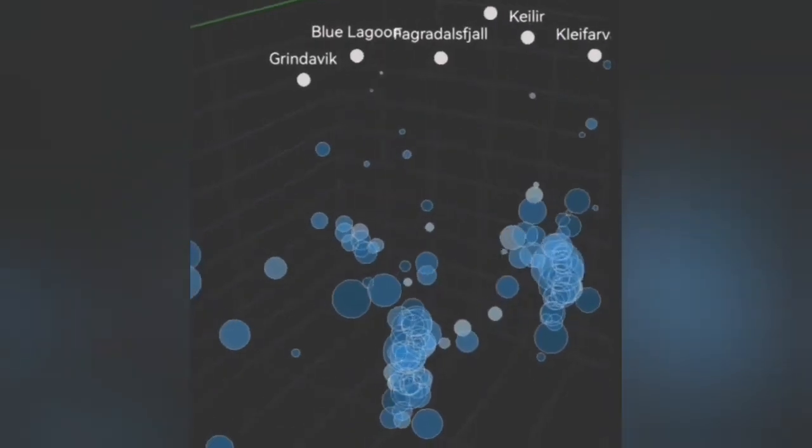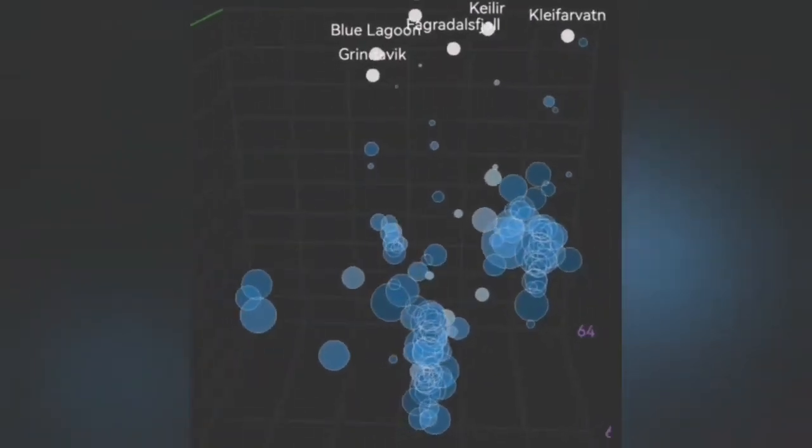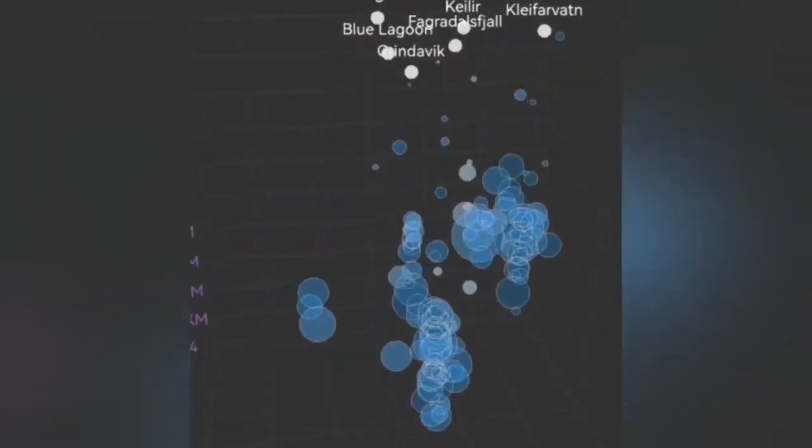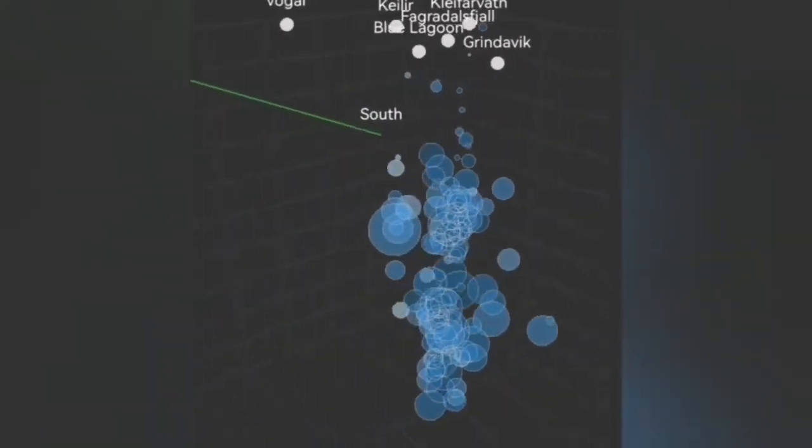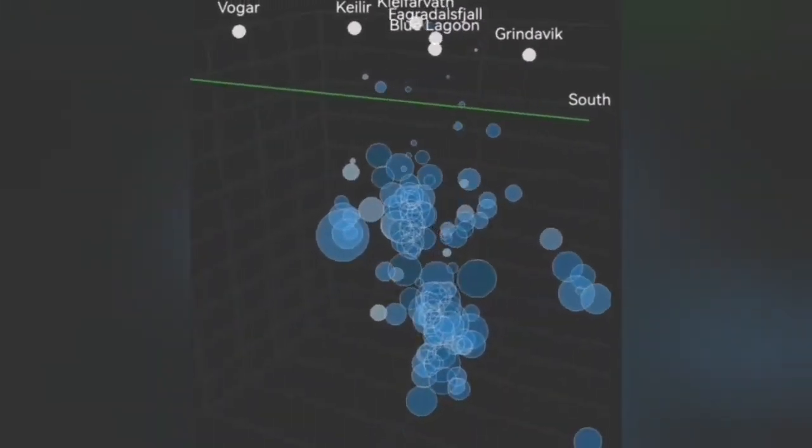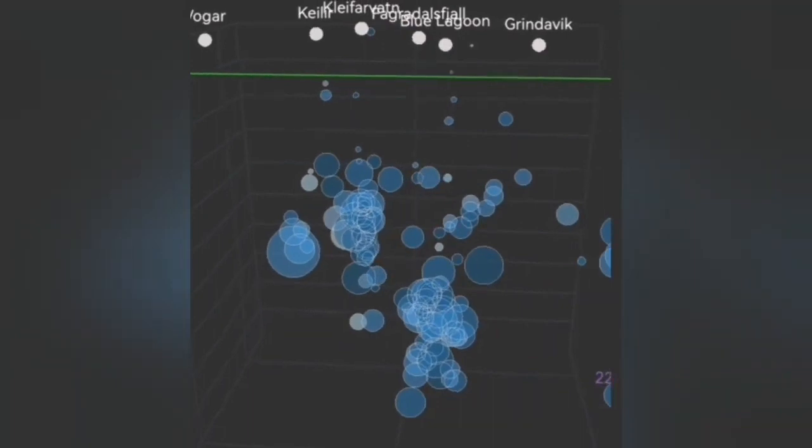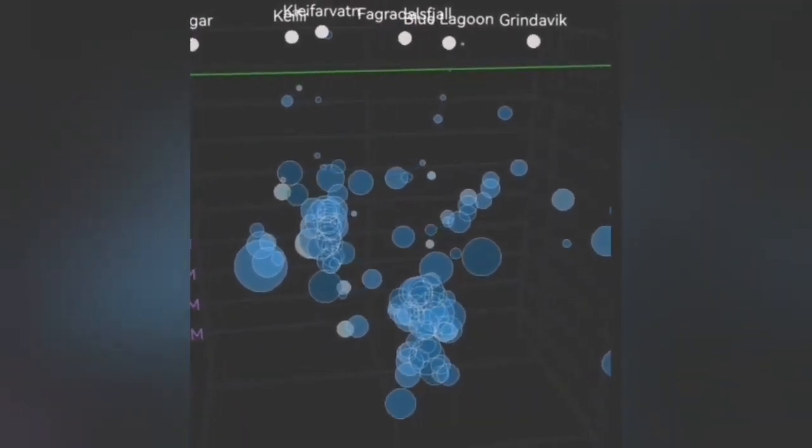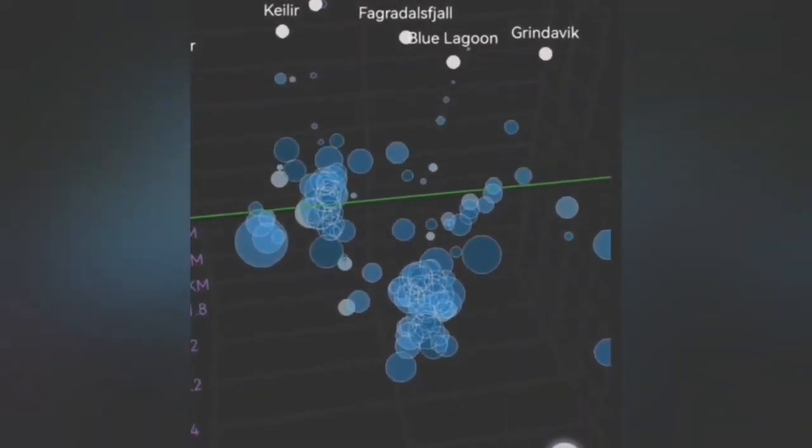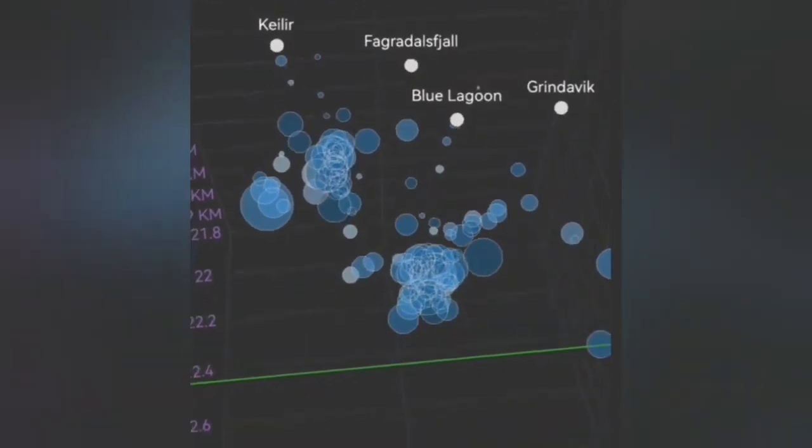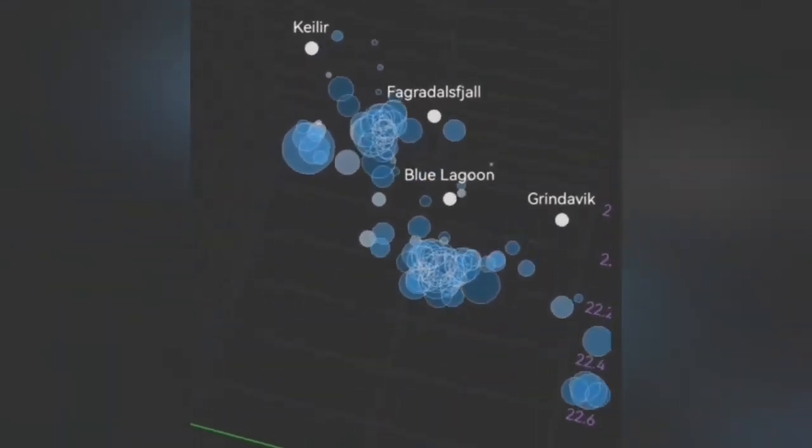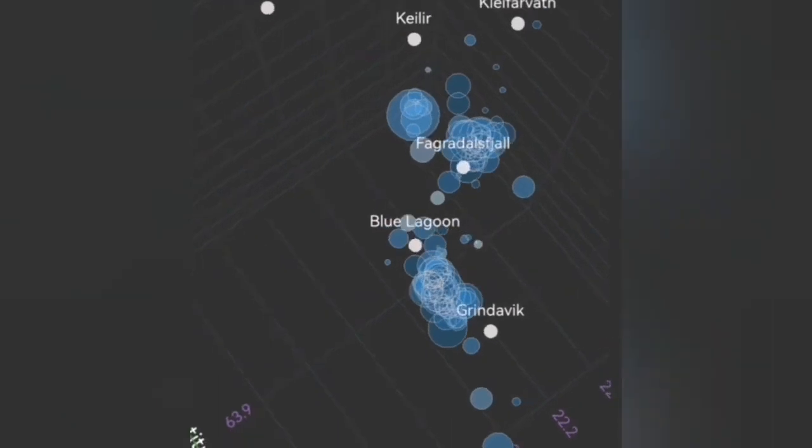This is today's data again. You can see that the same beam of circles is what we can call as a dike moving upward and then through a transgressive sill moving toward Grindavik again. And I move it again so you can see from the top position that is toward Grindavik.